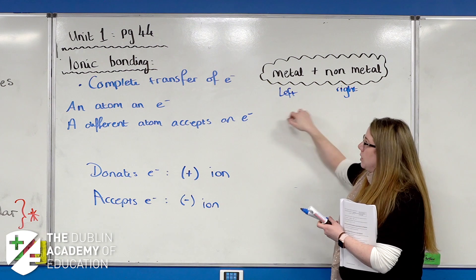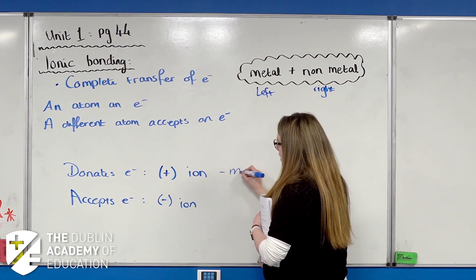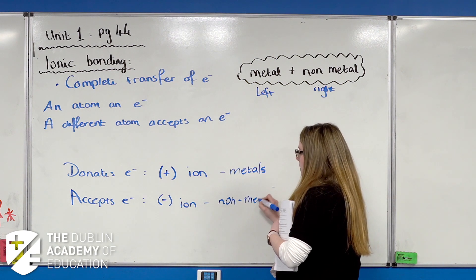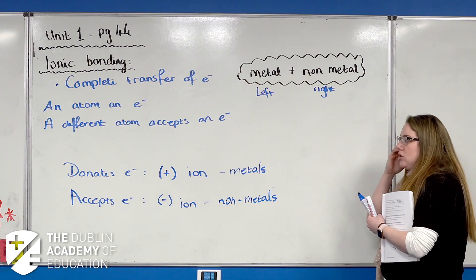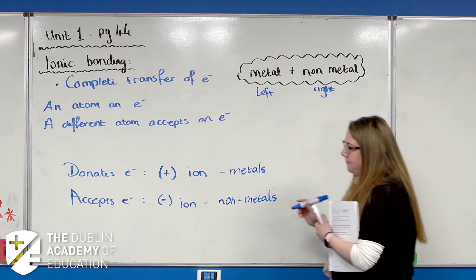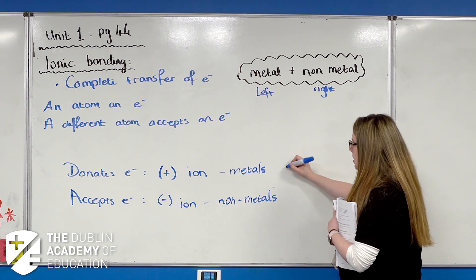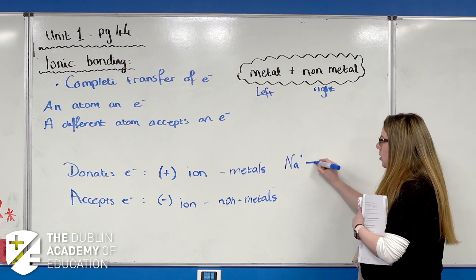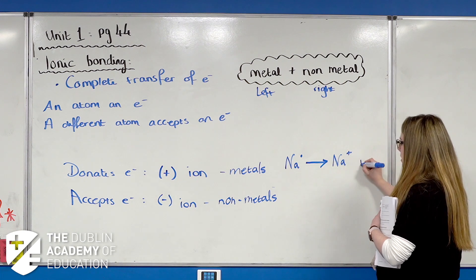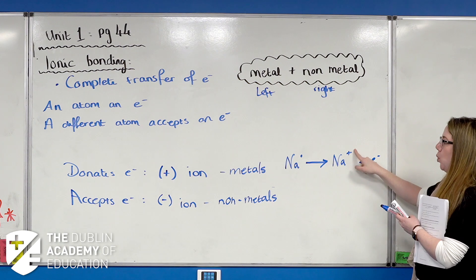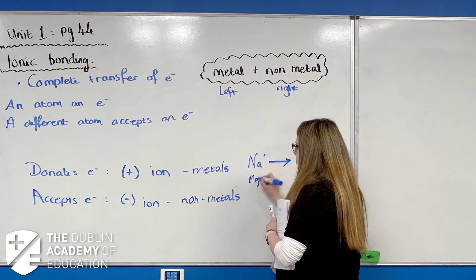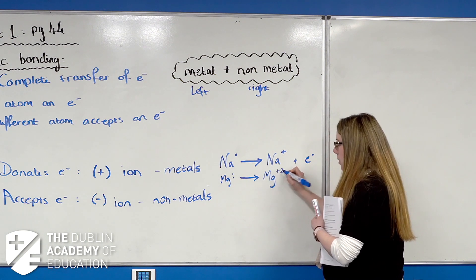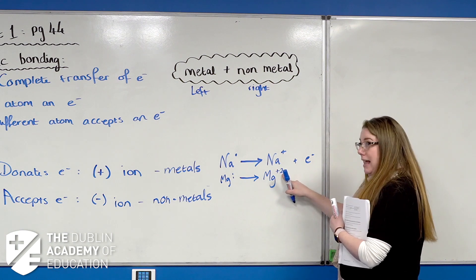Metals are going to donate electrons, so metals form the positive ion. Non-metals accept electrons and form the negative ion. The size of the charge on the ion is determined by the number of electrons accepted or donated. Sodium has one electron in its outer energy level; when it donates that electron it forms Na⁺. Magnesium has two electrons in its outer energy level; when it donates both it becomes Mg²⁺.